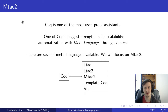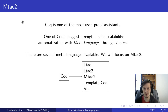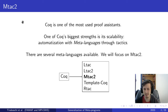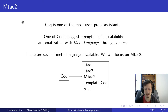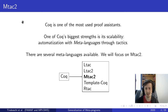Coq is one of the most used proof assistants. One of Coq's biggest strengths is that it's scalable through the automatization with meta languages through tactics. What this means is that we can create tactics — our building blocks — that allow us to create proofs, and automatization can be done in many ways.